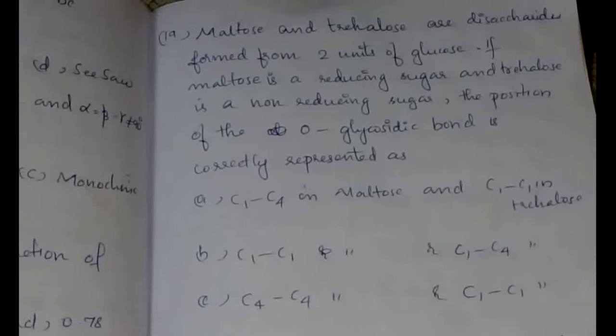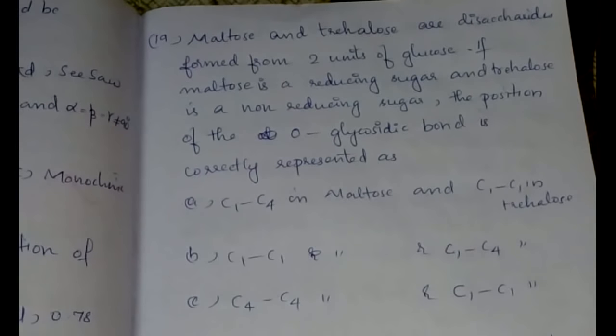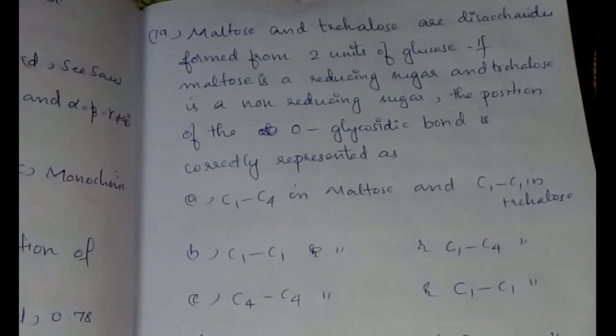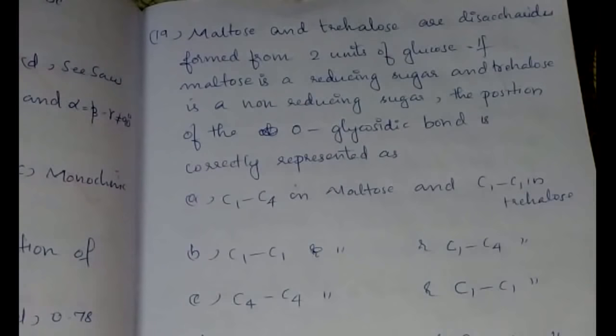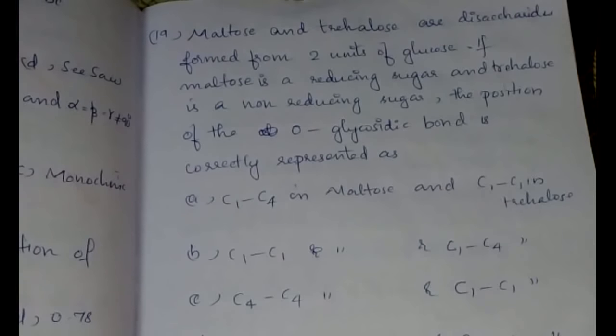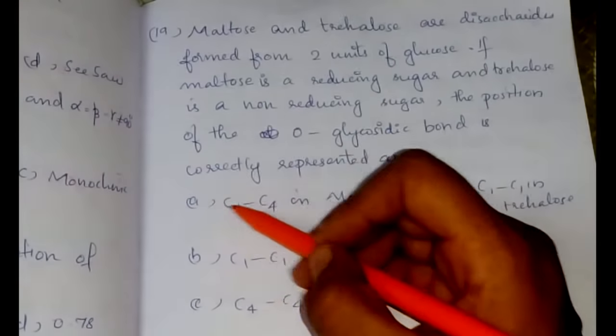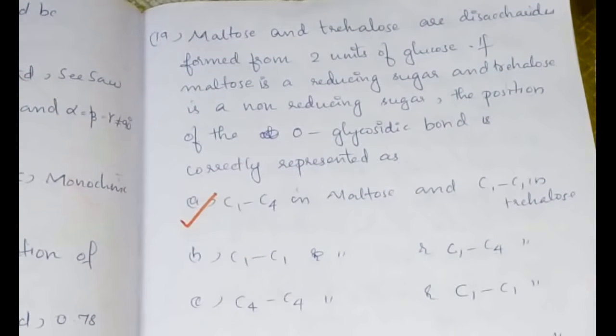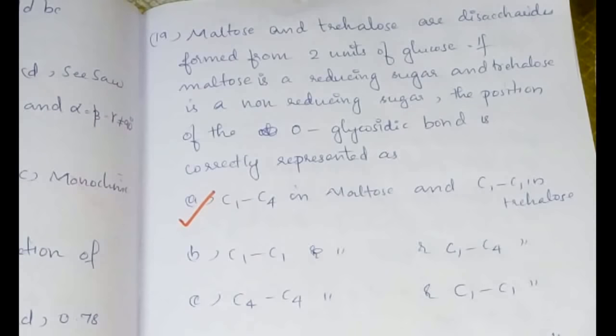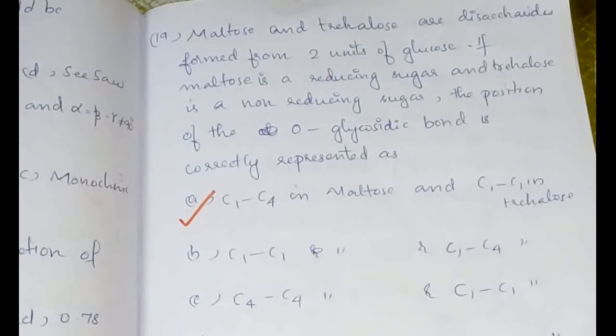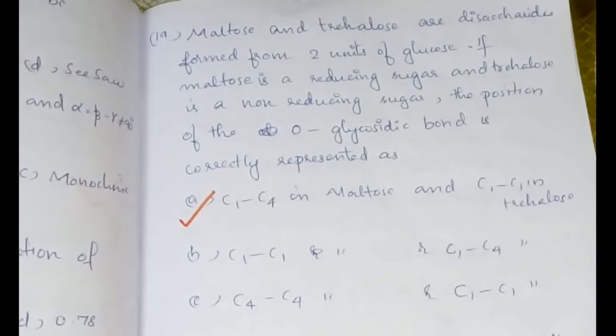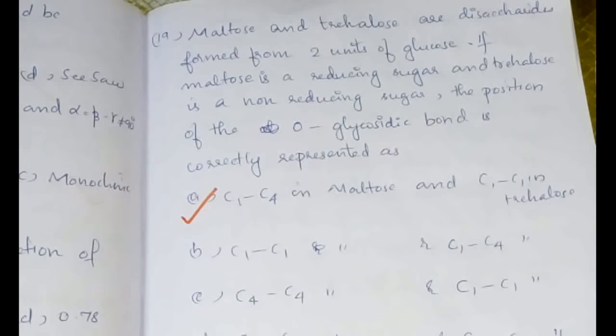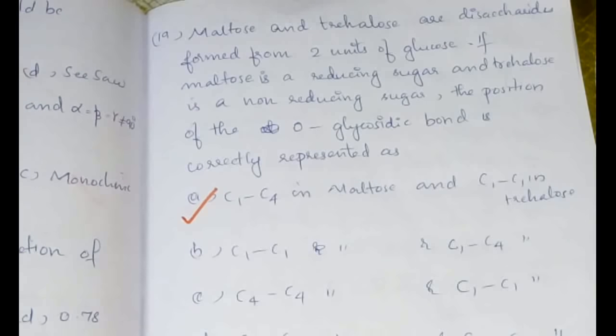Even if you haven't, I know in total you might have done well—not just these 25 questions but the others. So you might have written the others and scored above 50 or even 60; I'm very sure. Now we'll go to the next question. Maltose and trehalose are disaccharides formed from two units of glucose. If maltose is a reducing sugar and trehalose is a non-reducing sugar, the position of the O-glycosidic bond is correctly represented as C1 and C4 in maltose and C1 and C1 in trehalose.